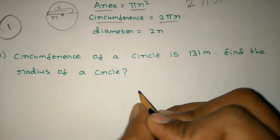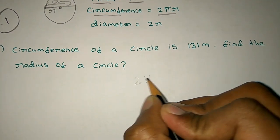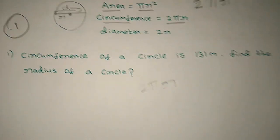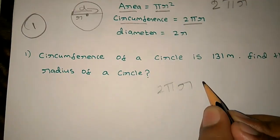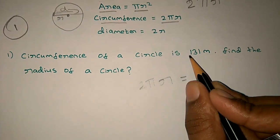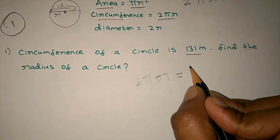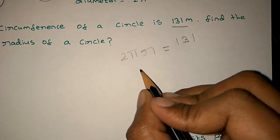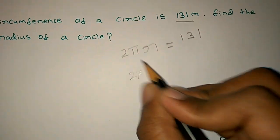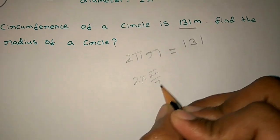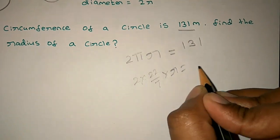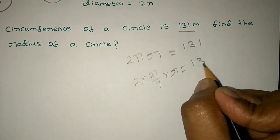We know the circumference formula. Since 2 pi R equals the circumference, we can write: 2 pi R equals 131, using pi equals 22 by 7.